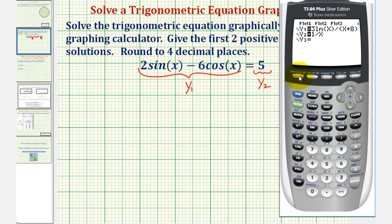So we'll press y equals. Clear any old functions out. So clear, enter, clear. Go back up to y one and we'll enter two sine x minus six cosine x. So there's the left side in y one. We'll press enter. Y two is equal to five.